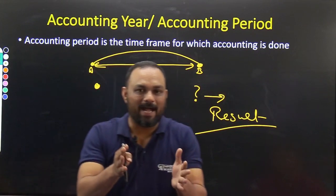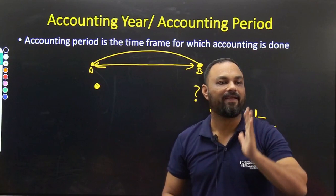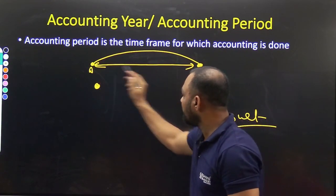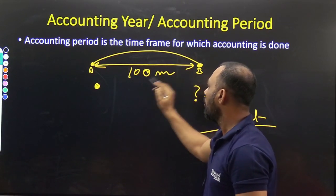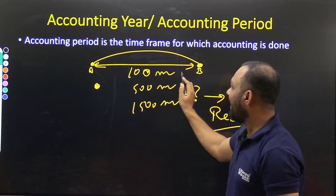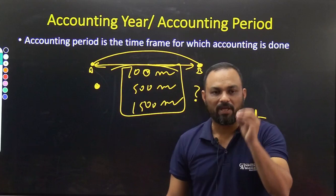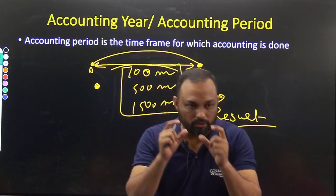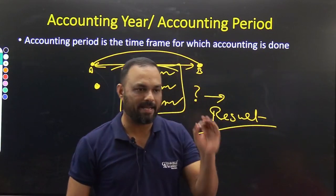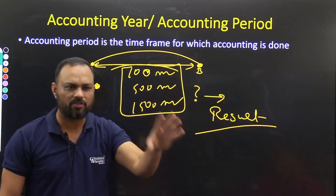So if you need an end result, there must be a definite distance — whether it is 100 meters, 500 meters, or 1500 meters. A definite distance must be set; only then can you get a result. The same concept applies to accounting.